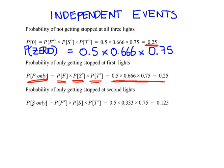Let's also find the probability of only getting stopped at the second traffic lights. That is: you don't get stopped at the first, you do get stopped at the second, and you don't get stopped at the third. So it would be 0.5 (don't get stopped at the first), times 0.33 (do get stopped at the second), times 0.75 (don't get stopped at the third). Working that out, we get 0.125.